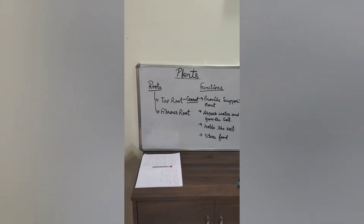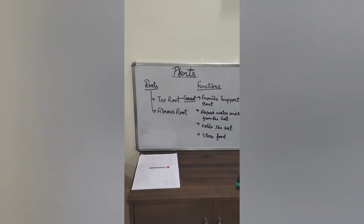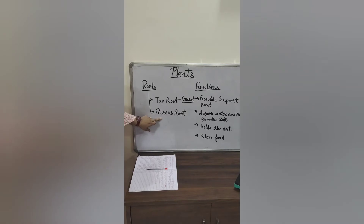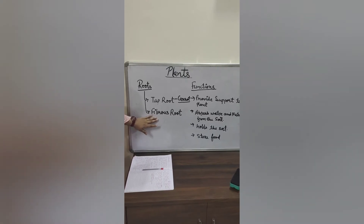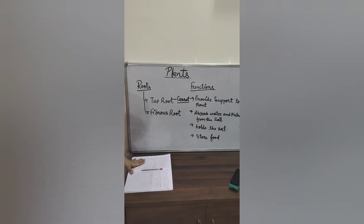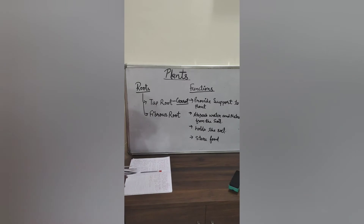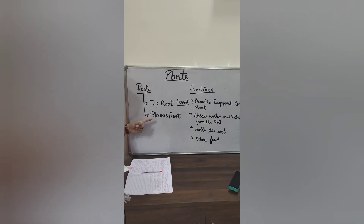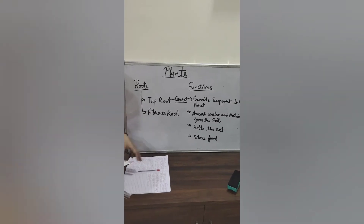Fibrous roots have many roots that break off into small lateral roots. In fibrous root, there is no main root. Plants like onion and grass have fibrous roots. The small lateral roots are able to cling to the soil, which makes them suitable for the prevention of soil erosion — they are able to hold the soil tightly. Whereas in tap root there is a thick main root, in fibrous root there is no thick main root; they are small lateral roots that break off into many other roots.